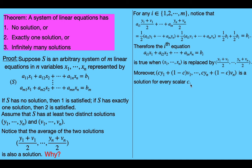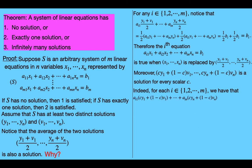Since there are infinitely many scalars, if we can show this n-tuple is a solution for every scalar c, we'll show the system has infinitely many solutions. We'll use the same technique as before: for each i from 1 to m, we look at the left-hand side of the i-th equation with these elements plugged in, which gives us this equation.